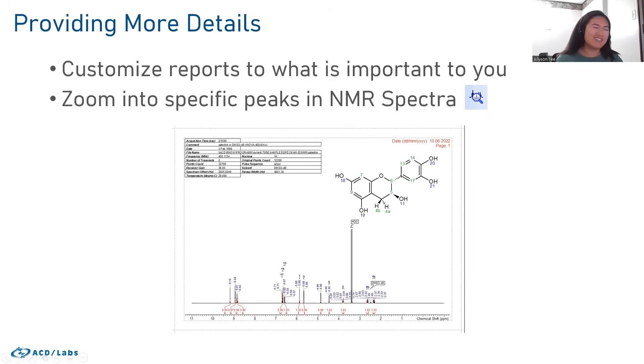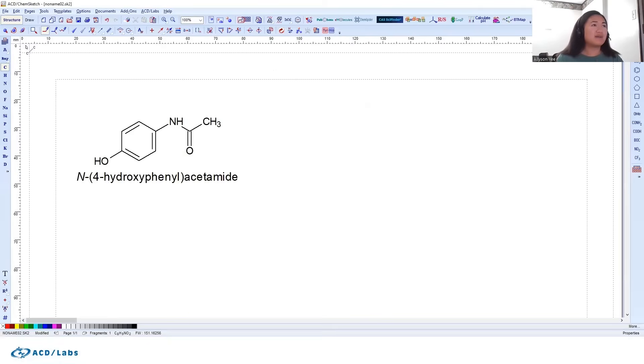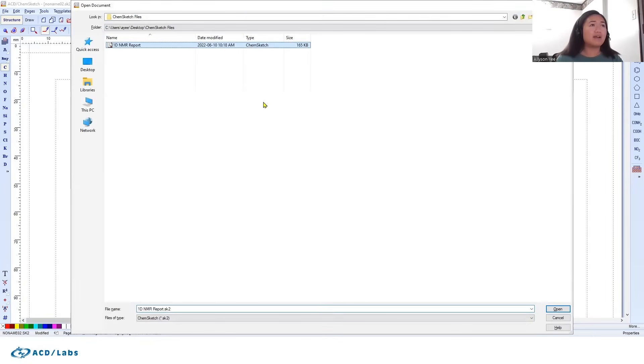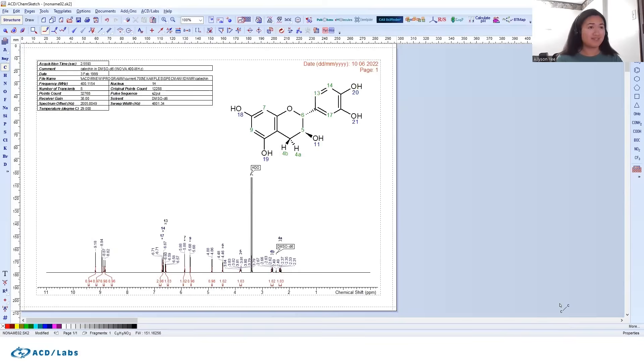So what I'm going to do is open my NMR report like so. You can see that we have all of our information - we have all of our metadata right at the top, we have our structure, we have our date, as well as our actual spectrum. Now let's say